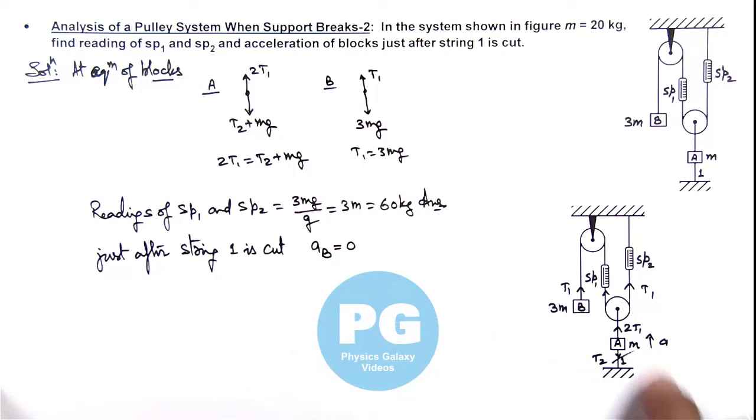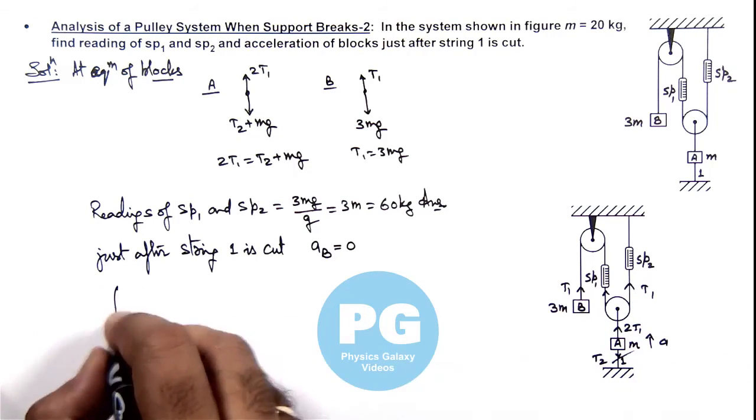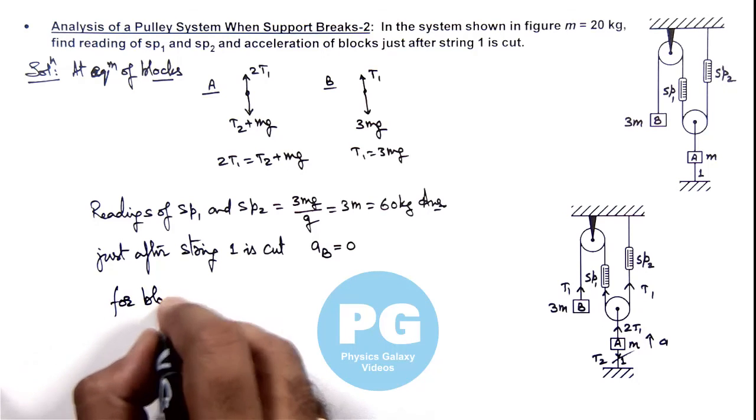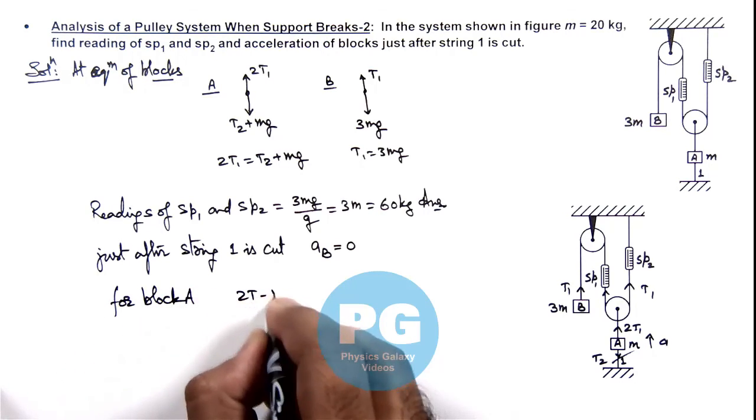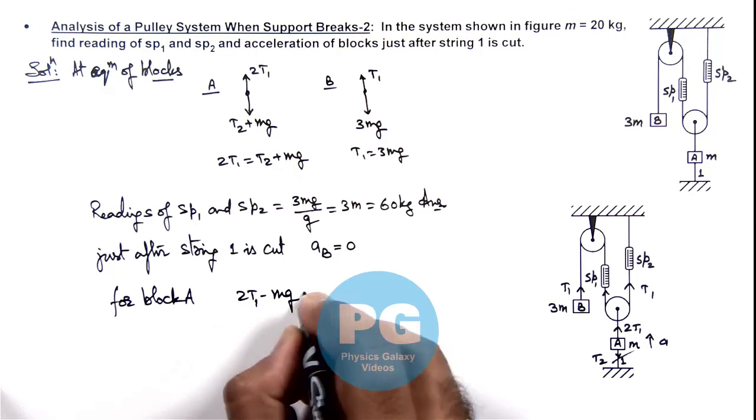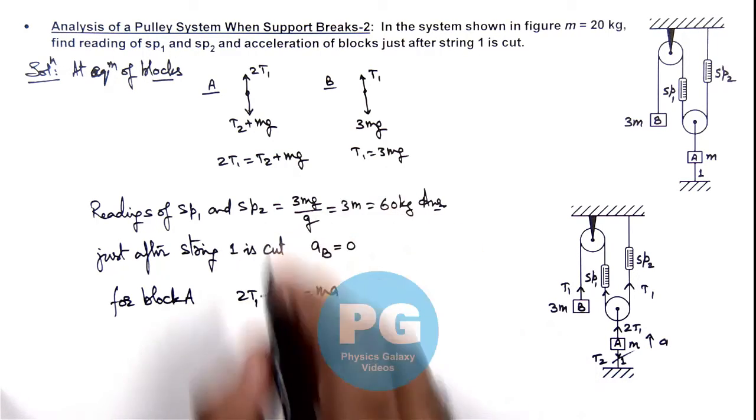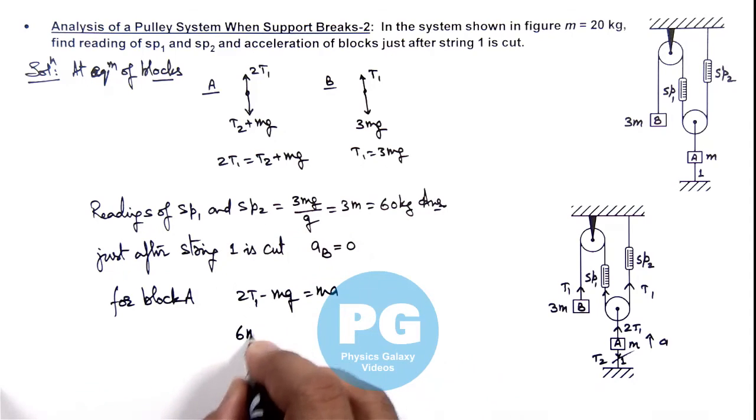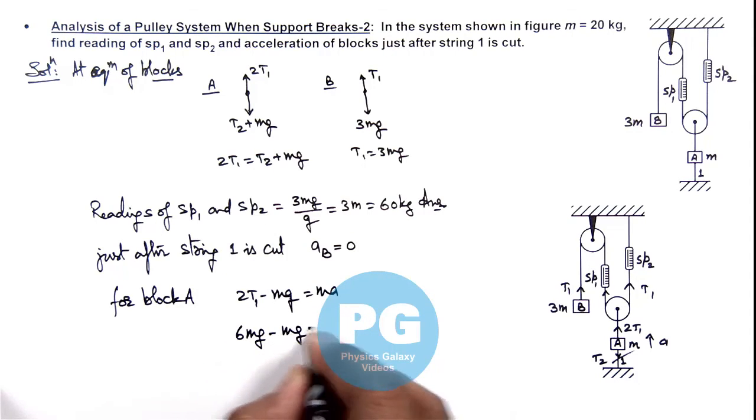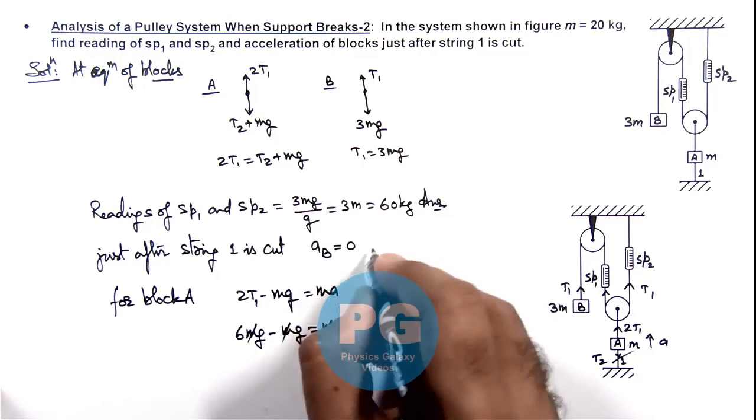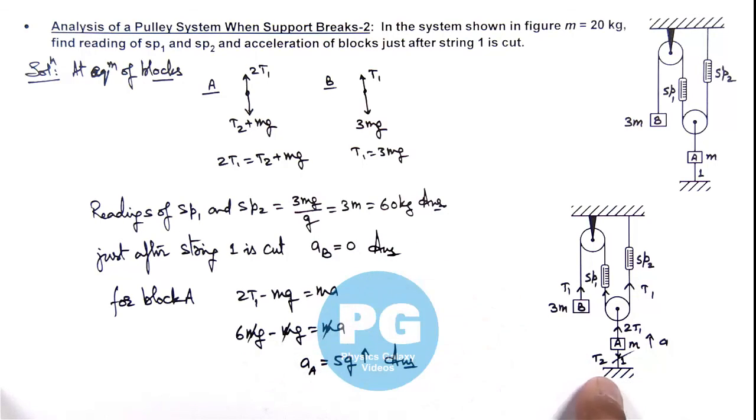For block A it is experiencing 2T1 in upward direction and its weight in downward direction. So we can write for block A, this 2T1 minus mg is equal to ma. And the value of T1 is 3mg, so this is 6mg minus mg is equal to ma. M gets cancelled out and the value of acceleration for block A we can get here is 5g in upward direction. So these will be the final results of acceleration of blocks A and B.